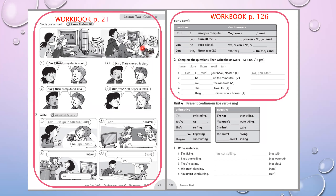Boys have got a big camera, girls have got a small one. Our camera is big — so you circle 'our'. Exercise 2 — поставити запитання із can. 'Can I use your camera?' — No, you can't. 'Can I watch TV?' — Yes, you can. 'Can I listen to CD?' — No, you can't.